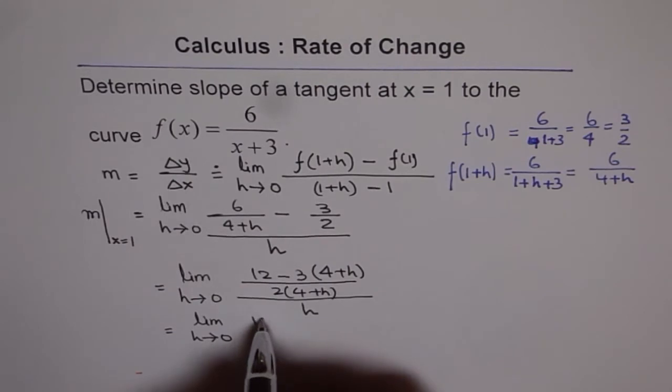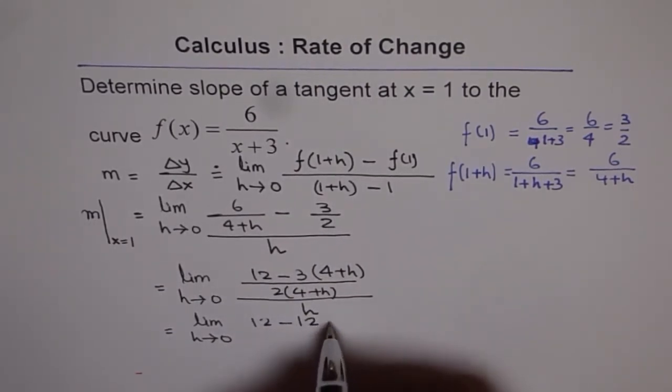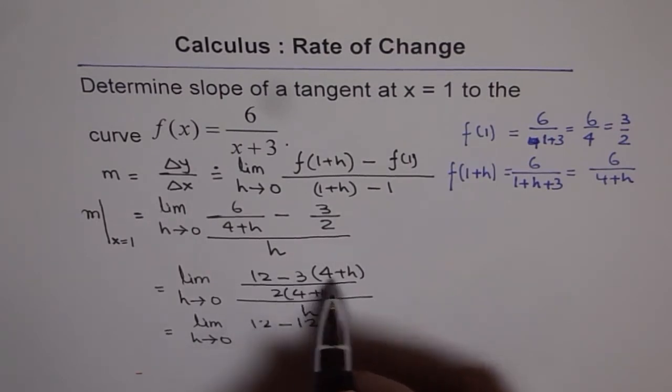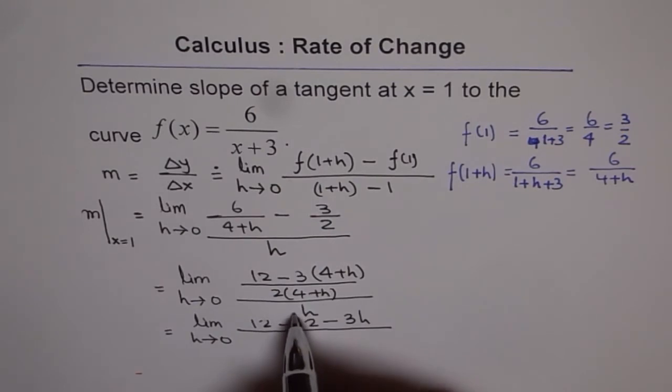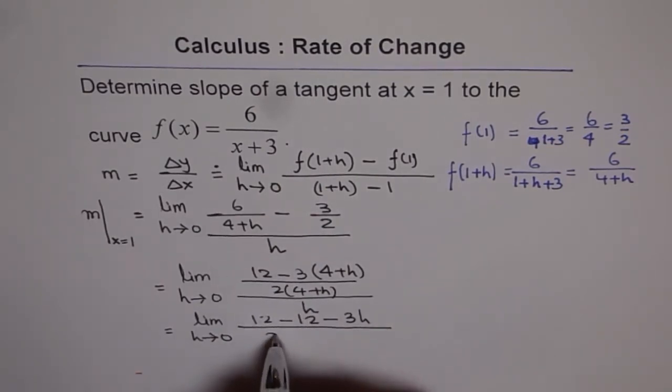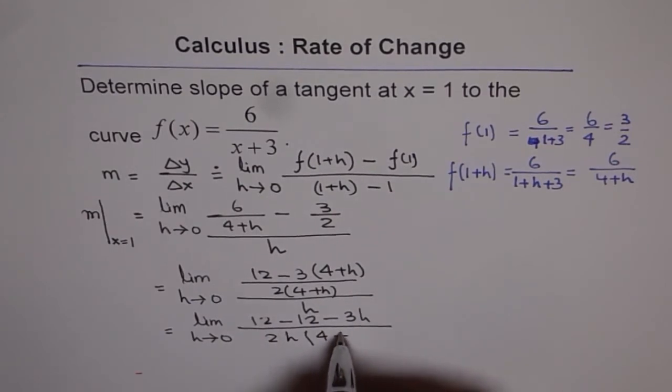So, let me just expand this and write 12 minus 4 times 3 is 12 minus 3h. h divided by, so we will take this in denominator. So, we get 2 times h times (4+h), correct?